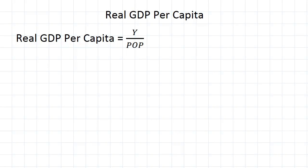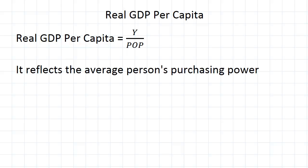Real GDP per capita quite simply could be rephrased as real GDP per person. We're just taking real GDP, which we represent as Y, and dividing it by the population. This is a very good measure of standard of living because it tells you the average person's purchasing power. Because we're dealing with real GDP we're getting purchasing power, and because we're dividing by the population we're getting it for the average person.